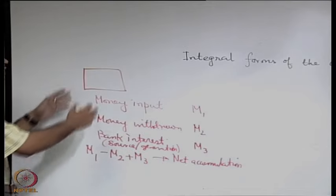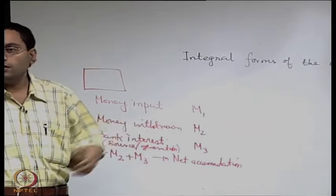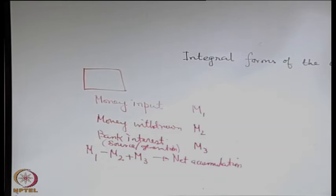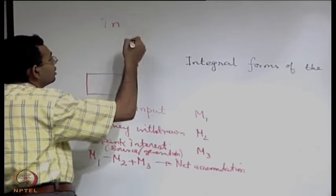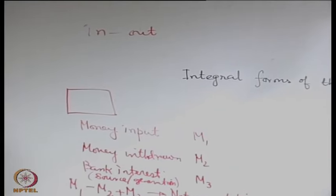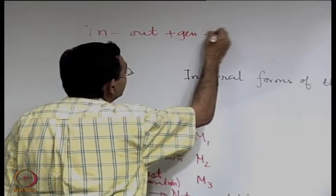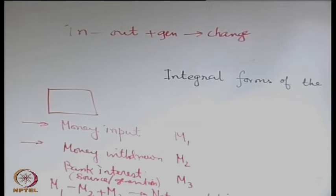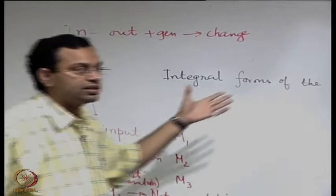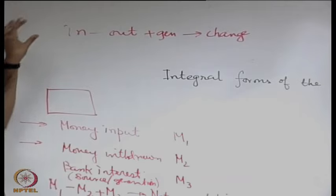This net accumulation represents a conservation of money. The bank account is like a control volume across which something is entering and something is leaving. Abstracting from money to something generic: in minus out plus generated equals net change. This is very simple, and whatever integral or differential form equations we write in fluid mechanics representing conservation of various quantities fundamentally follow this principle.